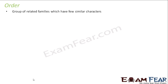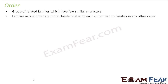The similarities are gradually decreasing. These are families which are related to each other and will have some similar characters. Families in an order are more closely related to each other than to families in any other order.